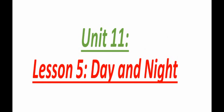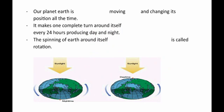Before talking about day and night and how they happen, we should remember first that we said before that Earth is rotating around the Sun in orbit. But this is not the only movement that Earth can make — Earth also rotates around itself.